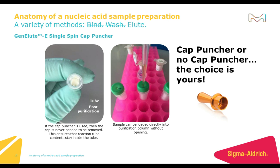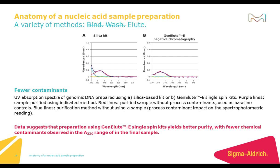You can choose your own workflow — you can simply load your sample directly into the column without opening the purification column by using the GenLuE Single Spin cap puncher device. This helps reduce cross-contamination by keeping the sample contained between transfer steps. Alternatively, you can load your sample directly onto the resin bead after unscrewing the cap — just remember to keep the cap loosened a quarter turn if no hole is punched. One spin and you're done, and now you have a GenLuE-purified nucleic acid.